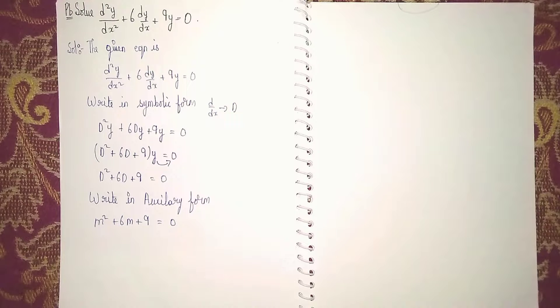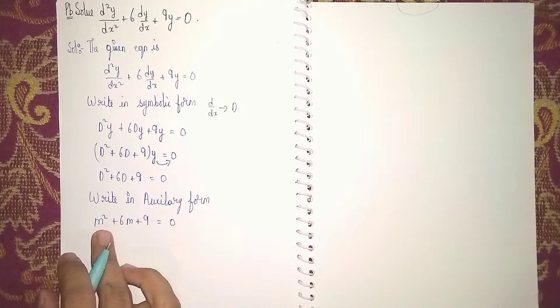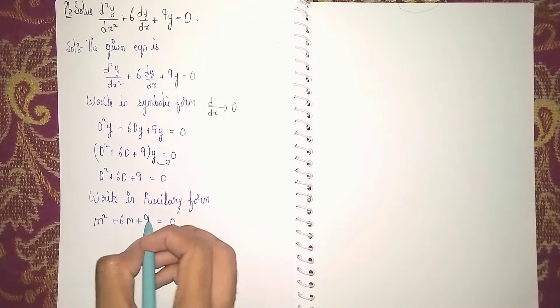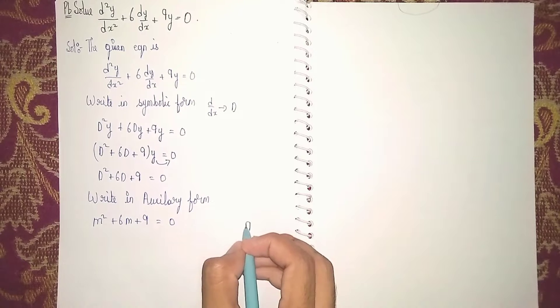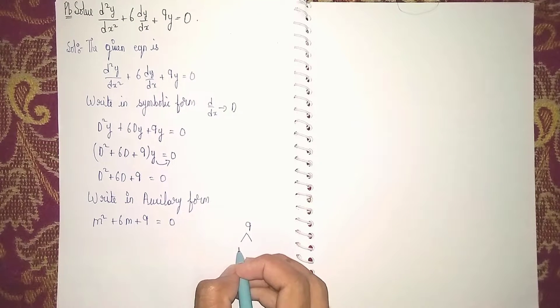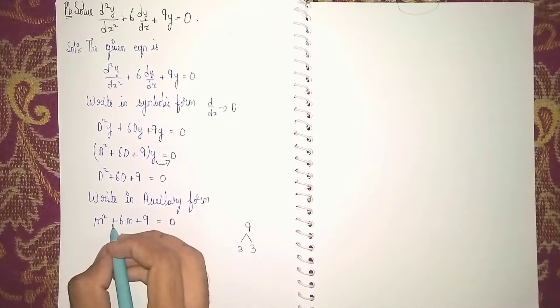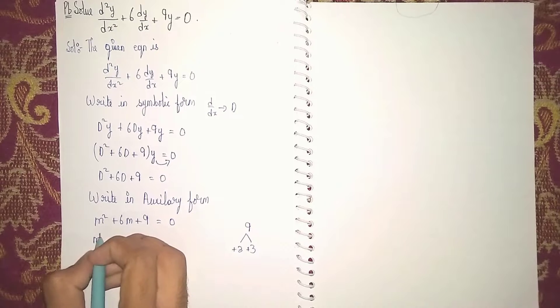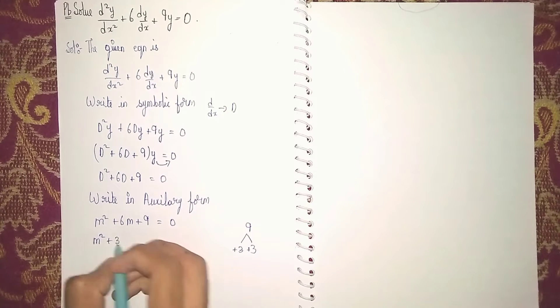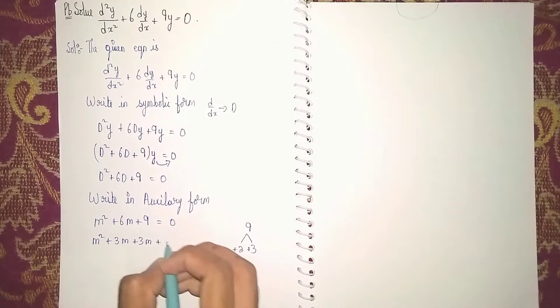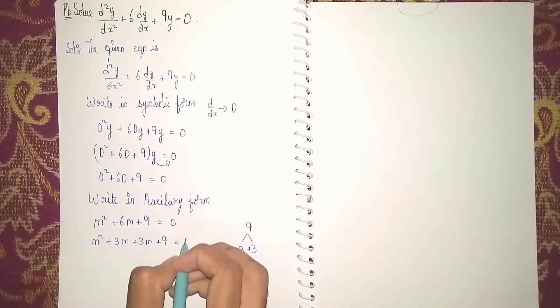Now which method are we using here? We are finding the factors, so we are using factorization method, middle term splitting. So 9, what are the factors of 9? We can write as 3 times 3 is 9. And here plus sign there, so plus 3 plus 3 we can write. So it becomes m² + 3m + 3m + 9 = 0.